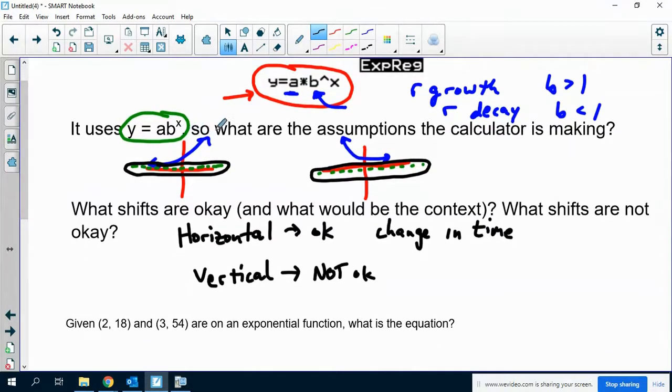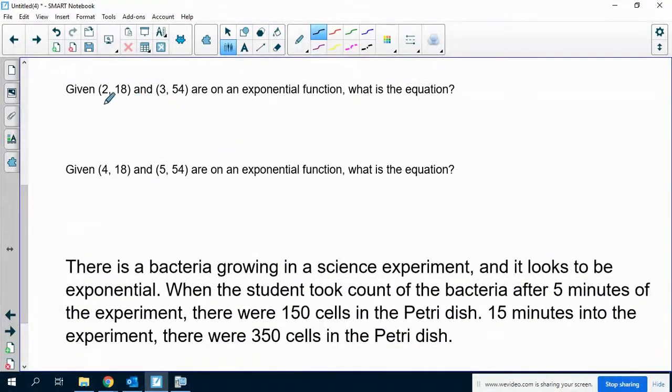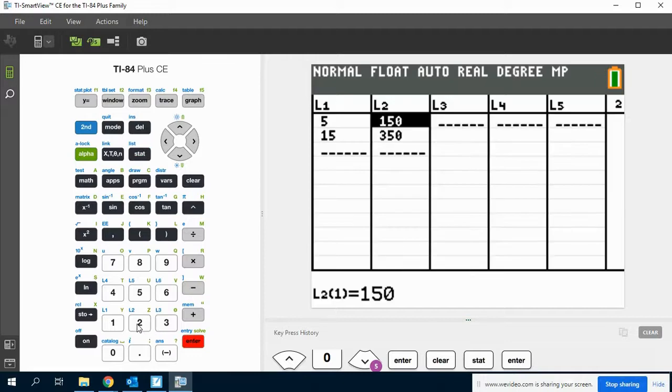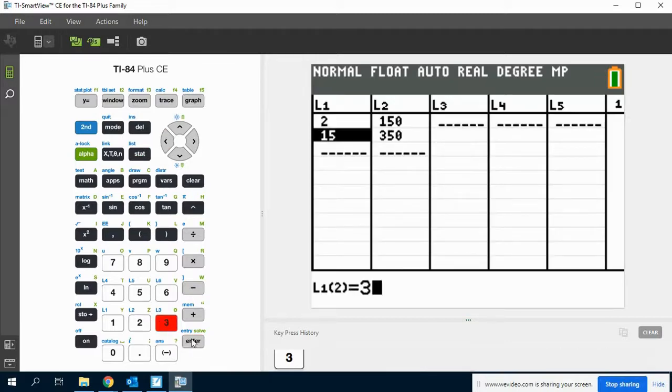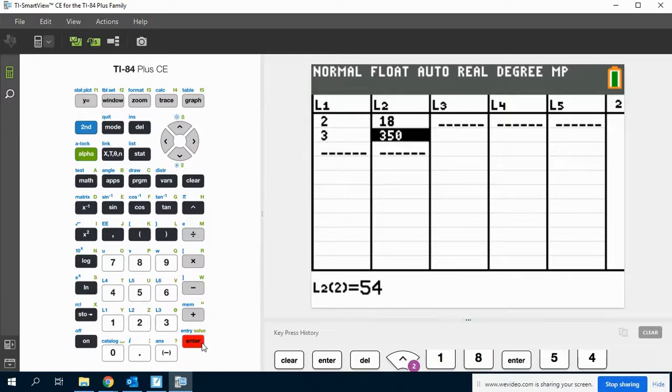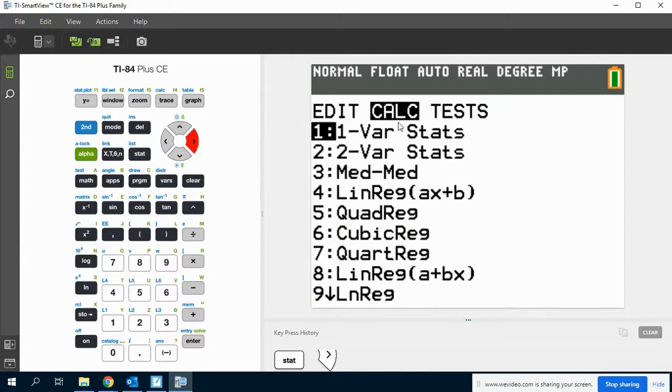So let's do a couple of quick examples. Given 2,18 and 3,54 are on an exponential function. So stat, edit, 2,18 and 3,54 are going to be on the function. 2,18 and 3,54 are on the function. Then I go to stat, calc, just like we always have.